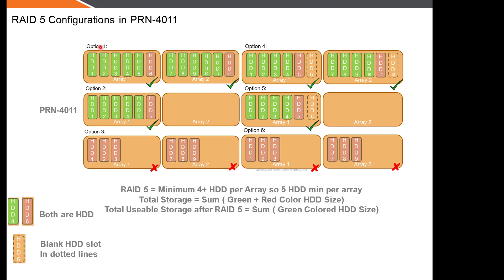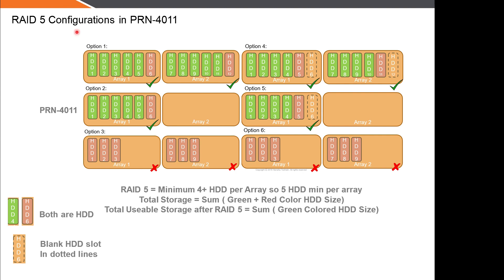In this slide we will see the RAID 5 supported configurations for PRN-4011. PRN-4011 supports RAID 5 and RAID 6. For RAID 5, in the first option all six slots per array are filled with hard disks — this is supported. Another option is one array filled with six hard disks, which also supports RAID 5 since the minimum is five hard disks per array. The second array is empty, which is fine — there is no RAID in that array.